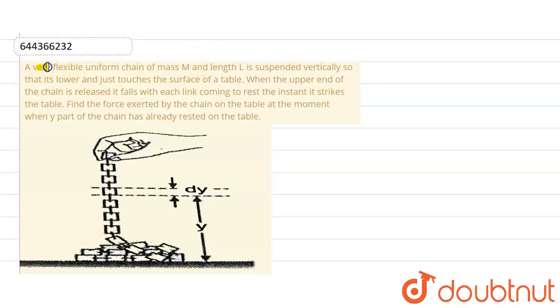A very flexible uniform chain of mass m and length l is suspended vertically so that its lower end just touches the surface of the table. When the upper end of the chain is released, it falls,